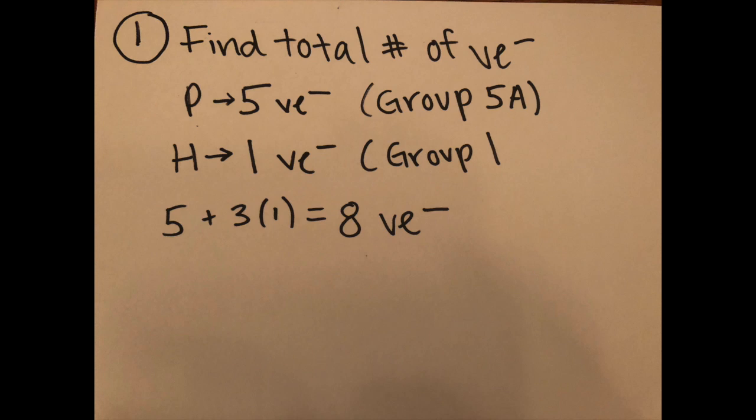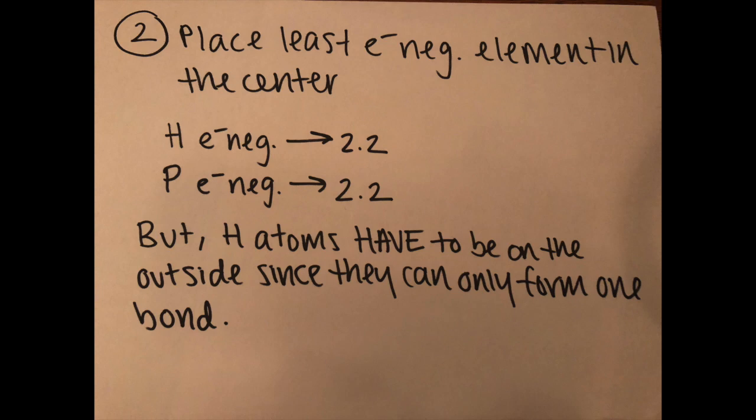So the first step is to find the total number of valence electrons and so we know because phosphorus is in group 5A it's going to have five valence electrons and because hydrogen is in group one it is going to have one valence electron and so thus when we sum this up we get eight valence electrons total and so we know that there are eight electrons that we can use in this Lewis structure.